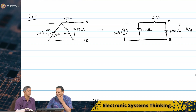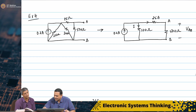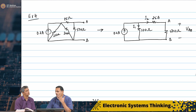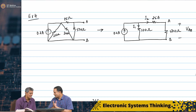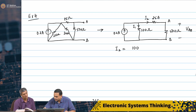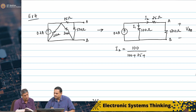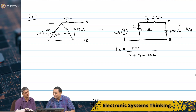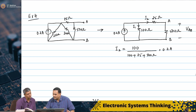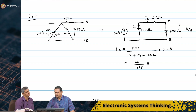This is A and this is B. All I need to do is find the current I2 through the 500 ohm branch. Using the current divider rule, the current in one arm depends on the resistance in the other arm. So I2 is 100 divided by the total, which is 100 plus 25 plus 500, giving 625, times 0.2 amperes. So I2 is 20 by 625 amperes.